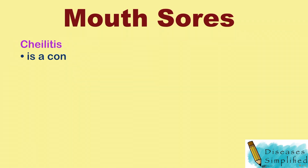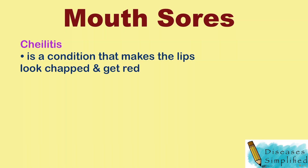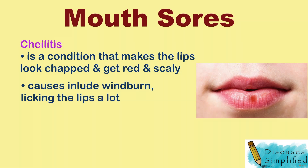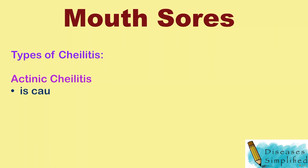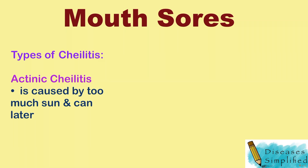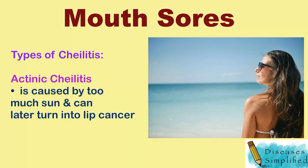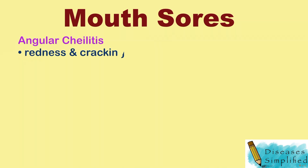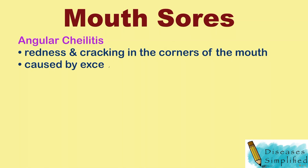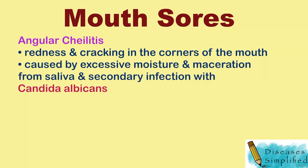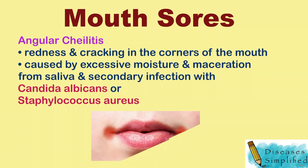Cheilitis is a condition that makes the lips look chapped and get red and scaly. A few things can cause cheilitis, including windburn, licking the lips a lot, and certain medicines and foods. There is more than one type of cheilitis. Actinic cheilitis is caused by too much sun and can later turn into lip cancer. Angular cheilitis causes redness and cracking in the corners of the mouth and is caused by excessive moisture and maceration from saliva and secondary infection with Candida albicans or Staphylococcus aureus.